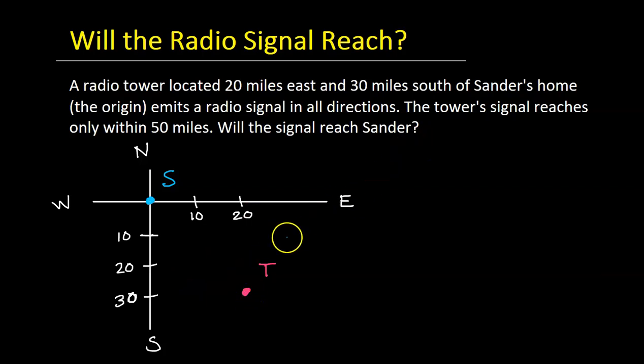So the question is what is the distance between Sander's and the tower? If this distance turns out to be less than 50, then the signal will reach because the tower signal has a range of 50 miles. If this distance turns out to be greater than 50, then the signal will not reach Sander's.